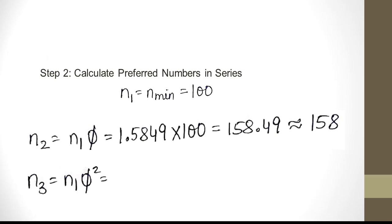n3 is n1 phi squared. n1 is 100 and phi squared means 1.5849 squared. So it will come as 251.19. We will round off and make it as 251.